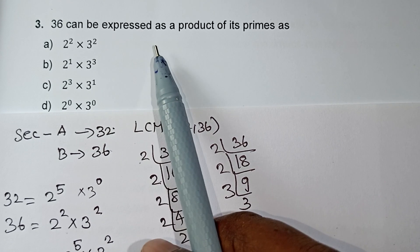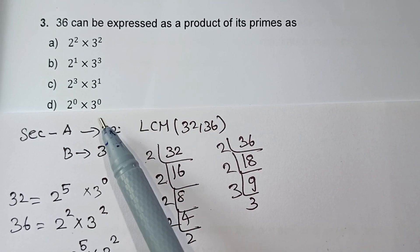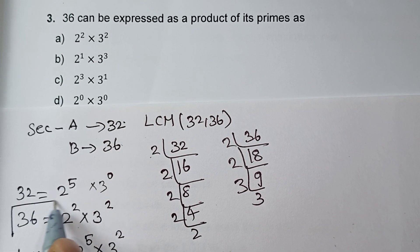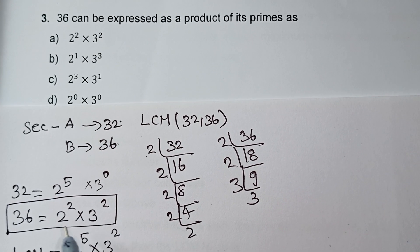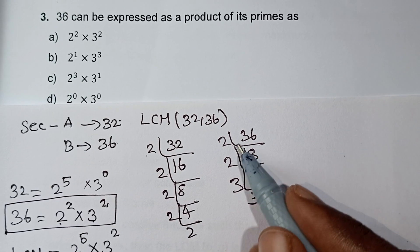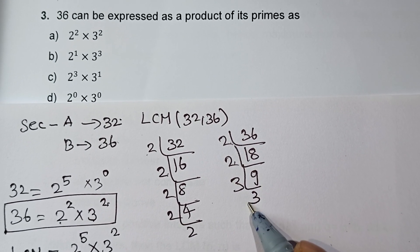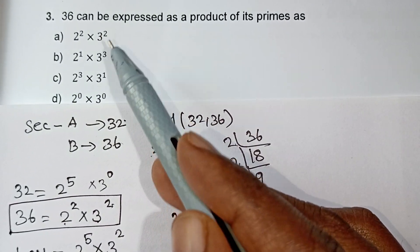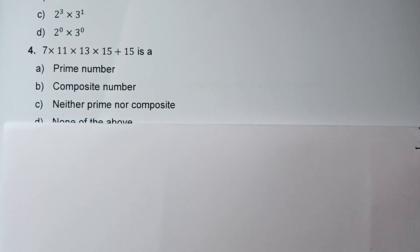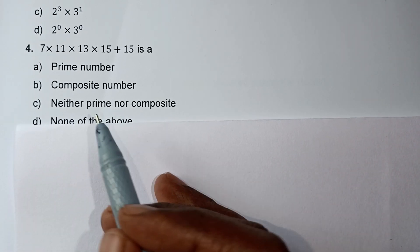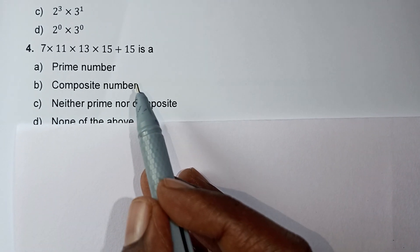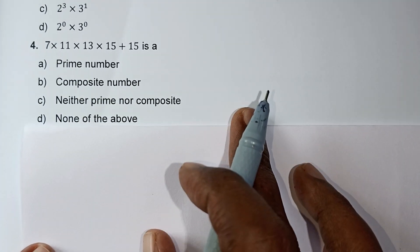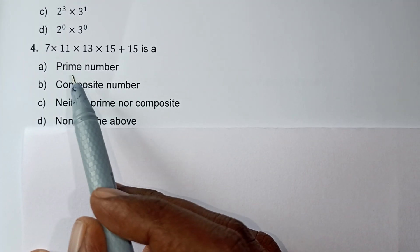Next question: 36 can be expressed as the product of primes. 36 = 2 power 2 × 3 power 2. That is the correct answer.